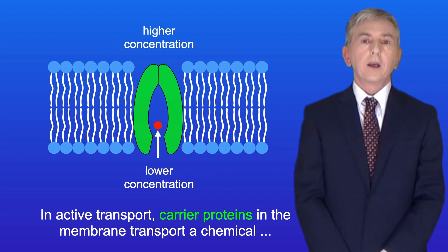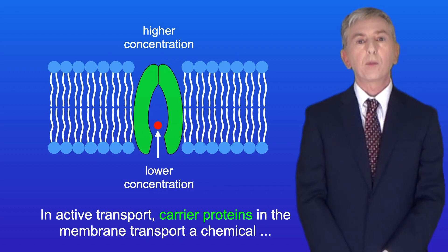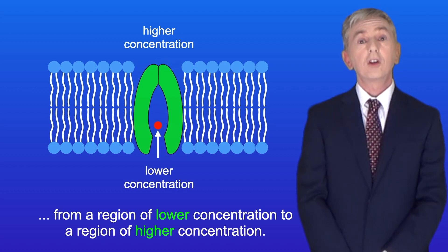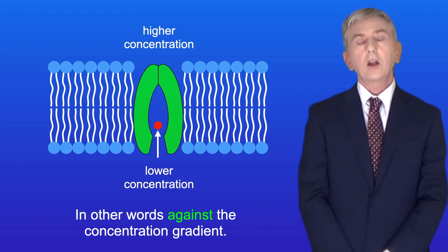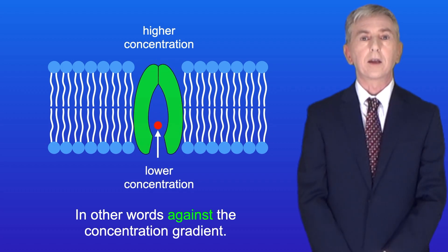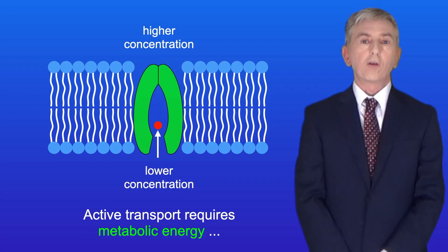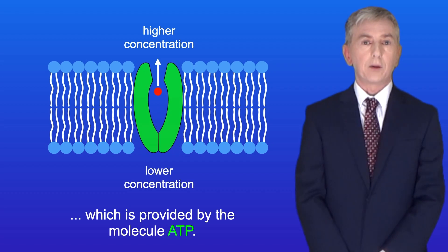In active transport, carrier proteins in the membrane transport a chemical from a region of lower concentration to a region of higher concentration. In other words, against the concentration gradient. Active transport requires metabolic energy, which is provided by the molecule ATP.